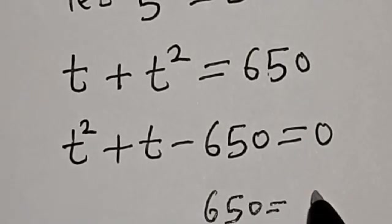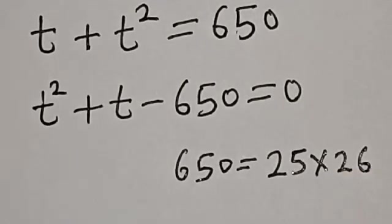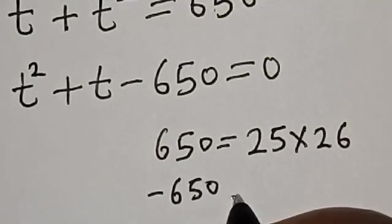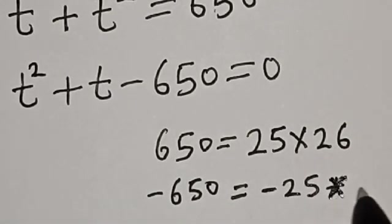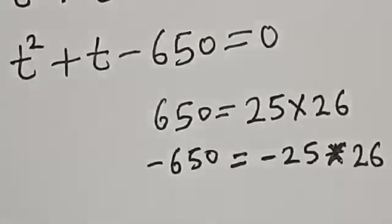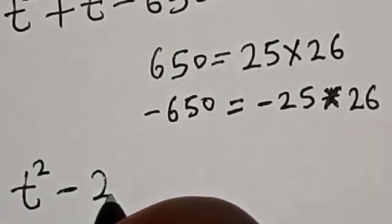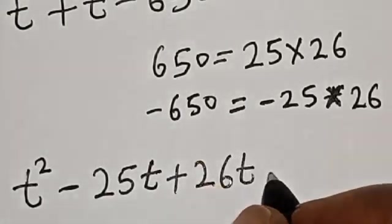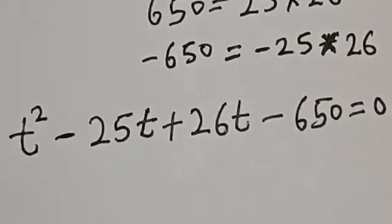Now, 650 equals 25 multiplied by 26, so minus 650 equals minus 25 multiplied by 26. Substituting into the equation, t squared minus 25t plus 26t minus 650 is equal to 0.